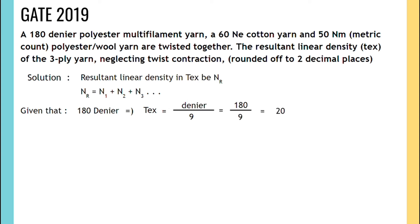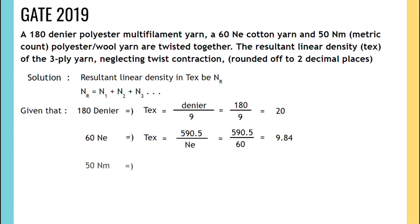Next, for 60 Ne conversion to Tex, the formula is 590.5 ÷ Ne = 590.5 ÷ 60 = 9.84 Tex. For Nm conversion to Tex, the formula is 1000 ÷ Nm = 1000 ÷ 50 = 20 Tex.